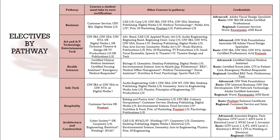The six pathways are: Business; Art, AV, Technology, and Entertainment Tech; Health Science; Information Technology; Hospitality; and Architecture and Construction. Students should choose electives that match their talents, their interests, and their post-secondary plans. Students must also choose at least two alternates for each elective, as there is a possibility that your first choice may not be offered, may be full, or not offered during a class period you have open. It's important that your alternate is a course that you would want to take.